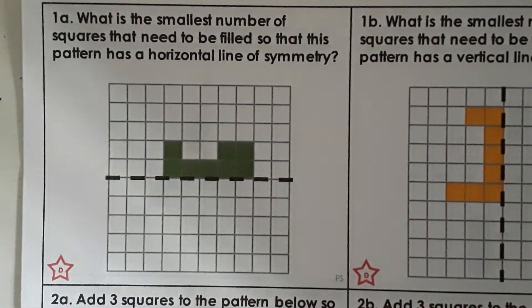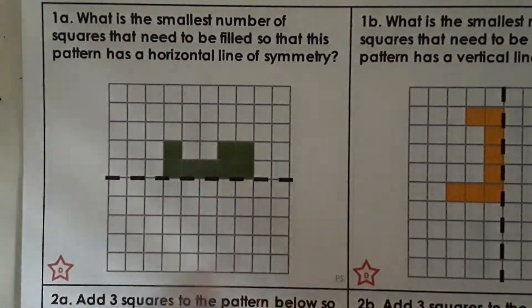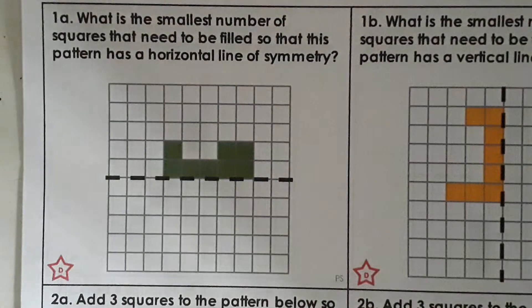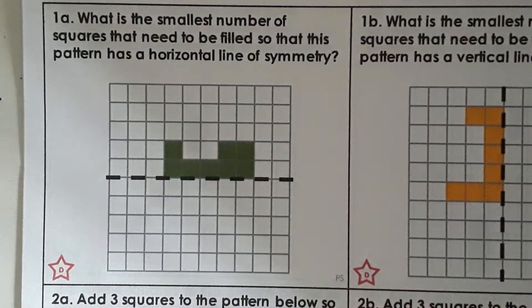Okay so with the classroom secrets you need to make sure that you read the question and answer the question. All right so question 1a what is the smallest number of squares that need to be filled so that this pattern has a horizontal line of symmetry. So horizontal is our line going across from left to right or right to left. Okay and again I advise you work systematically. All right and remember it is asking you how many squares need to be filled to make the horizontal line of symmetry.